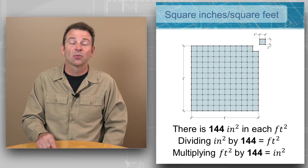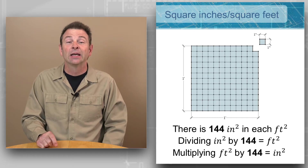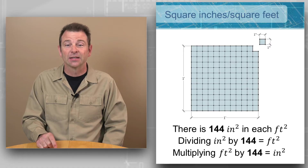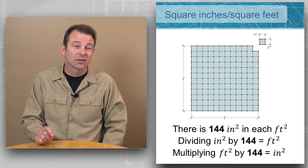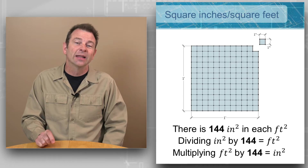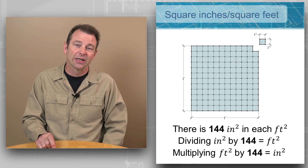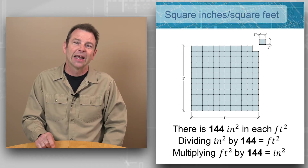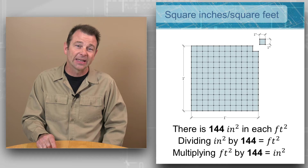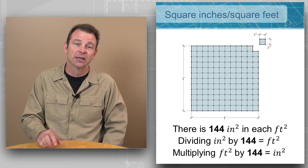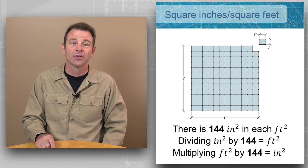It's showing how many square inches will fit into the space or area of a square foot. A square foot is one foot long by one foot wide, and a square inch is one inch long by one inch wide, and there are 144 square inches that will fit into a square foot.